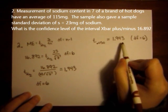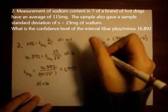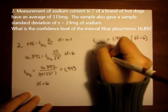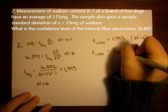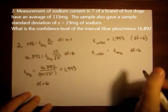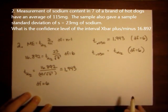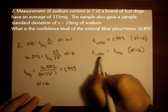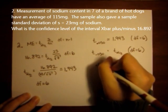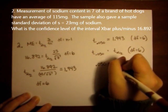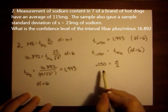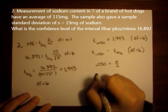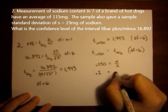So the 1.943 is our t alpha over 2. So t.050 equals t alpha over 2 when degrees of freedom is 6. So when the t values are the same, the subscripts must be the same. So .050 must equal alpha over 2. Now if I multiply both sides by 2, I get .1 equals alpha.